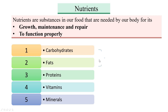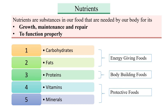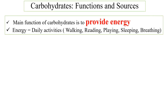There are five main types of nutrients. Carbohydrates and fats give us energy, so foods containing them are called energy-giving foods. Proteins are needed for growth and repair of the body, so foods containing proteins are called body-building foods. Foods containing vitamins and minerals are called protective foods, as they protect us from diseases.